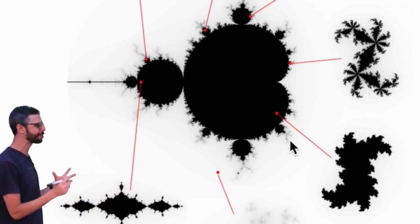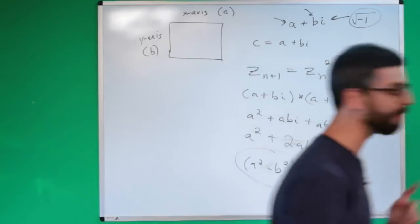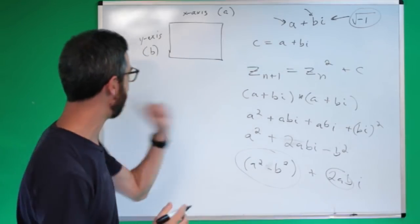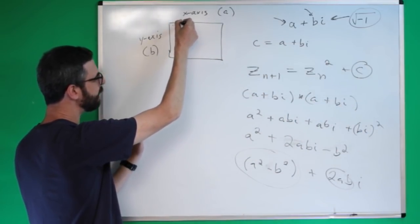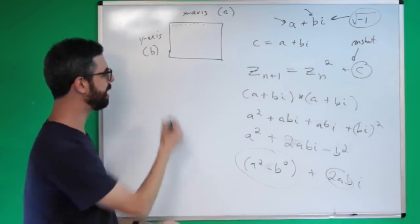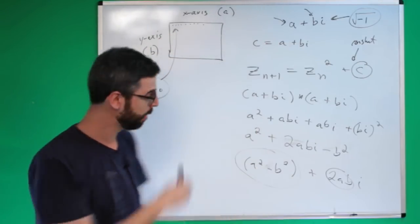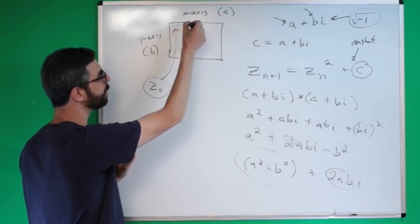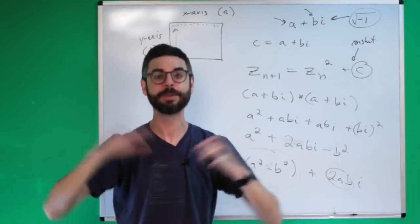Julia sets are often thought of as like Mandelbrot dust — patterns that emerge out of pieces of the Mandelbrot set in a way. There's a key difference in how the Julia set works. Instead of c being related to the very pixel that you're iterating, c in the Julia set is actually just a constant. So z sub zero is equal to the complex number represented by the pixel, but the c that you add to it is just a constant.